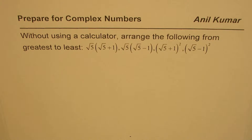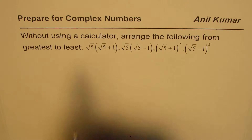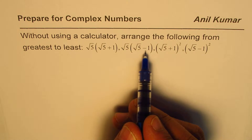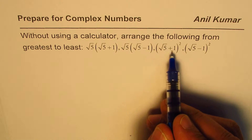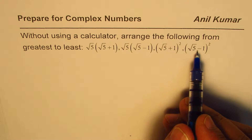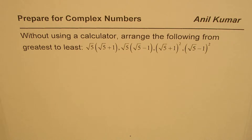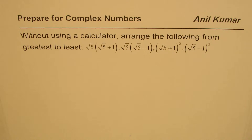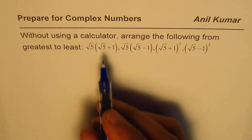I'm Anil Kumar. Let us prepare for complex numbers. The question here is: without using a calculator, arrange the following from greatest to least. We have √5×(√5+1), √5×(√5-1), (√5+1)², and (√5-1)². You can pause the video, find the answer, and then look into my suggestions.